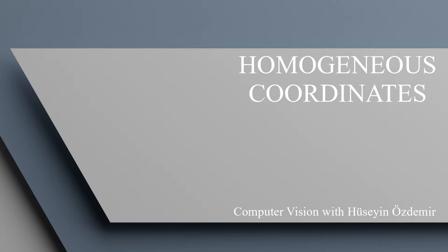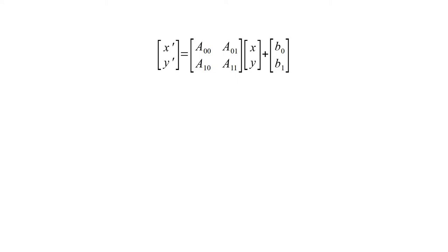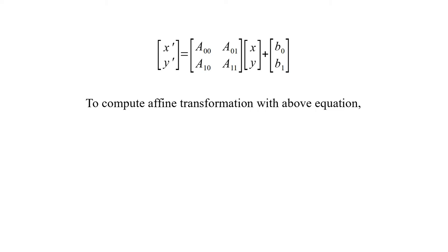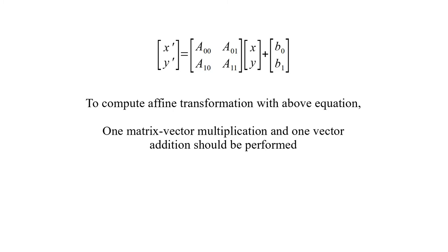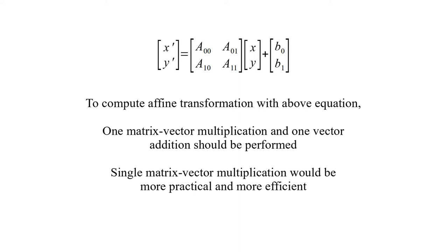In this video I will talk about homogeneous coordinates. To compute an affine transformation with this equation, one matrix-vector multiplication and one vector addition should be performed. A single matrix-vector multiplication would be more practical and more efficient. The solution is to use homogeneous coordinates.